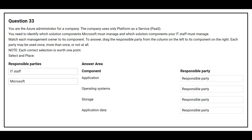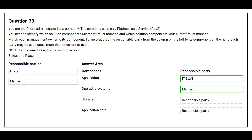On the left side you have the responsible parties, on the right side you have the component. The first component is application — the correct responsible party is IT staff. The second component is operating system — the correct responsible party is Microsoft. The third component is storage — the correct responsible party is Microsoft. The fourth component is application data — the correct responsible party is IT staff.